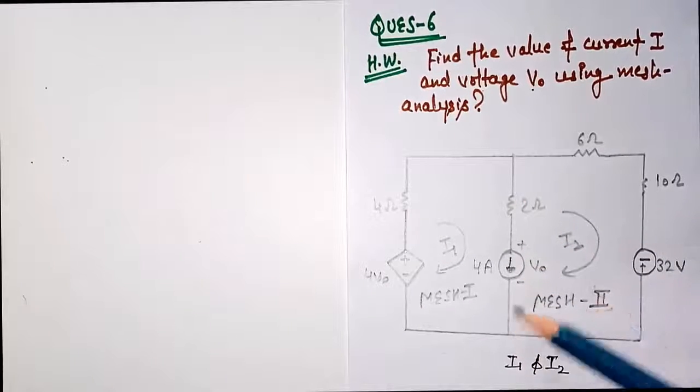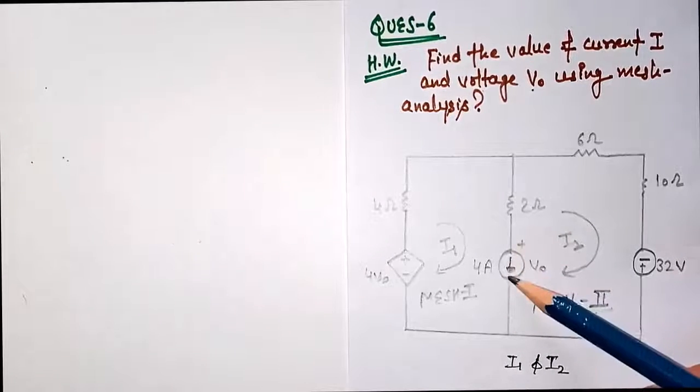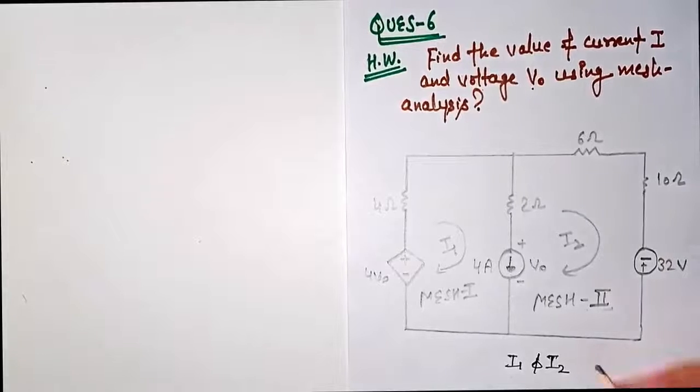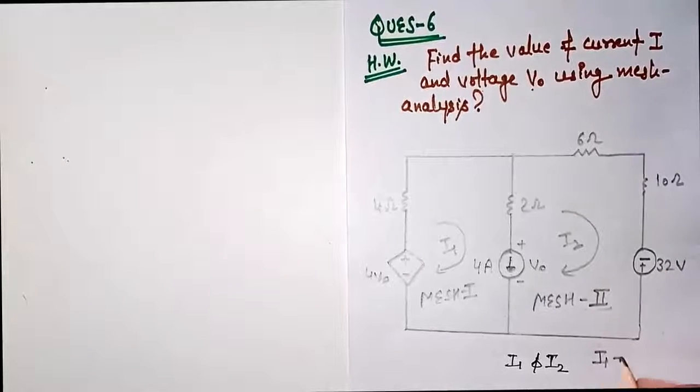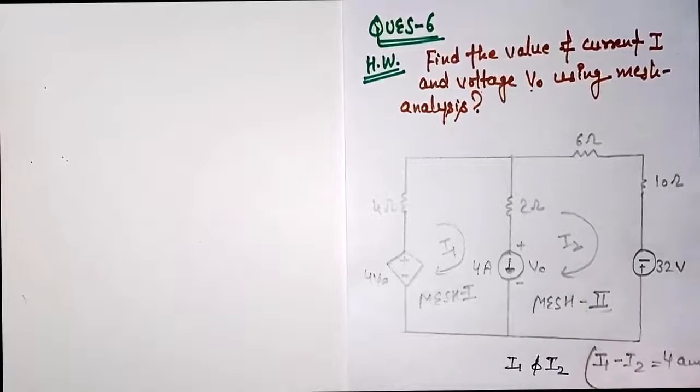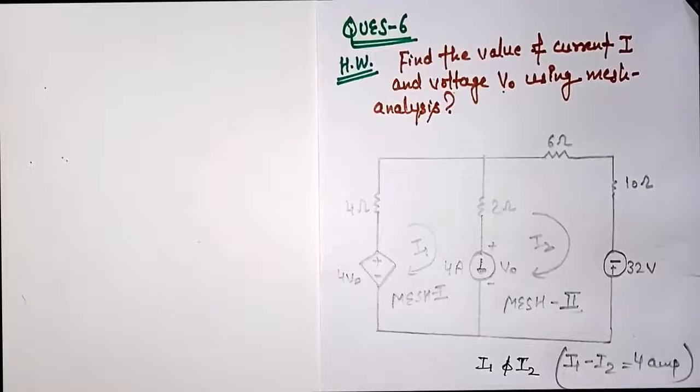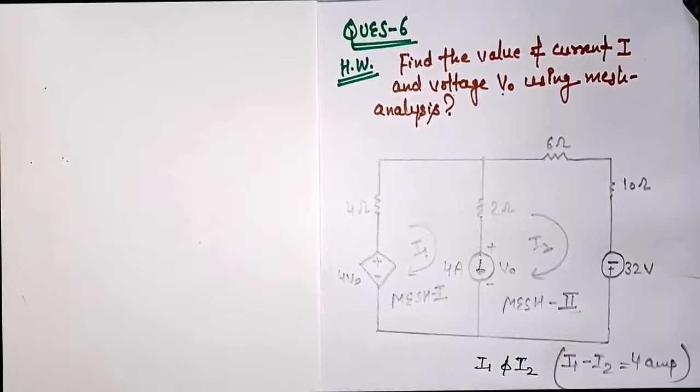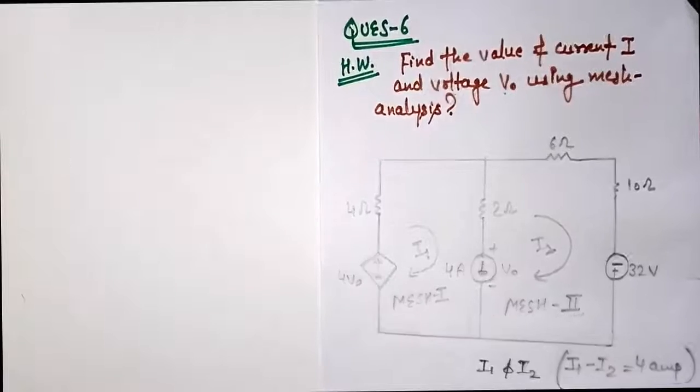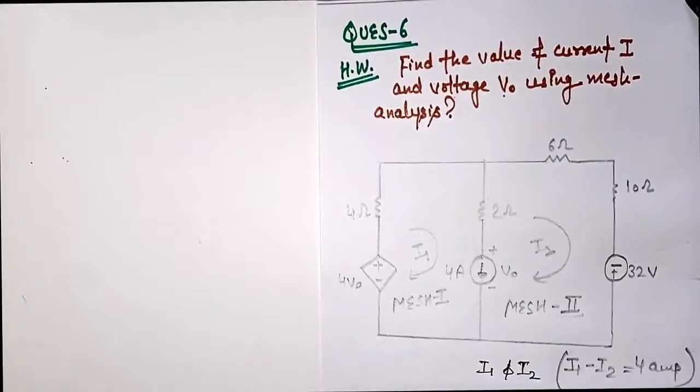I1 is the current flowing in downward direction and I2 is the current flowing in upward direction. That means I1 minus I2 must be equal to 4 ampere. Use this concept and try to solve this numerical, then tell me the answer in the comment section.